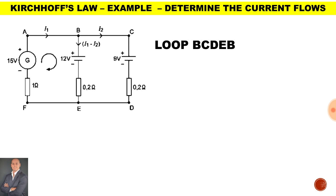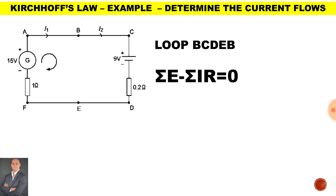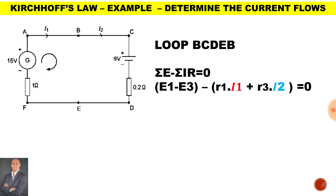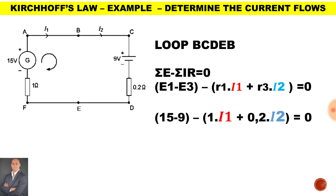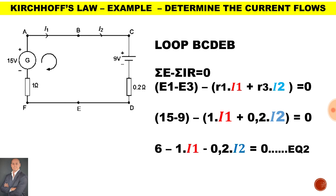Now let's look at the second part of the circuit, loop B, C, D, E, B — which means we ignore the first battery. The applied voltage minus the sum of the volt drops is equal to zero. The applied voltage is E1 minus E3, subtract the volt drops. The volt drop across the generator is R1 times I1 and the volt drop across the second battery is R3 multiplied by I2. R1 is 1 ohm and R3 is 0.2 ohms. The sign outside the bracket is a minus; minus multiplied by a positive gives a negative. Therefore equation 2 is: 6 minus 1 times I1 minus 0.2 times I2 equals zero.